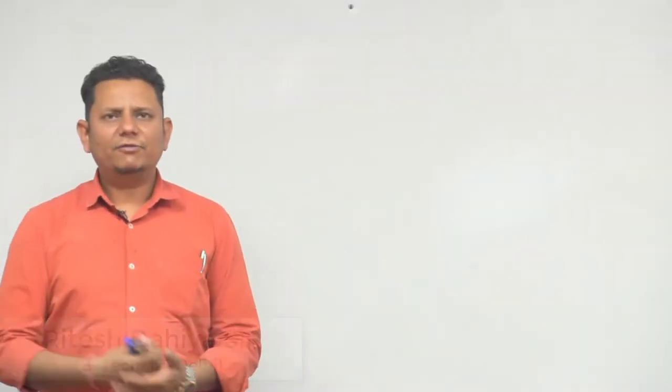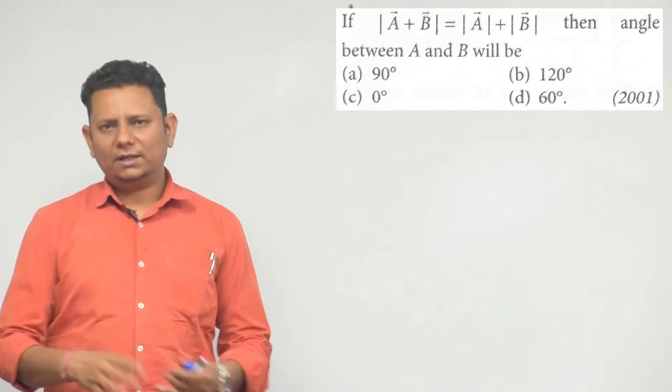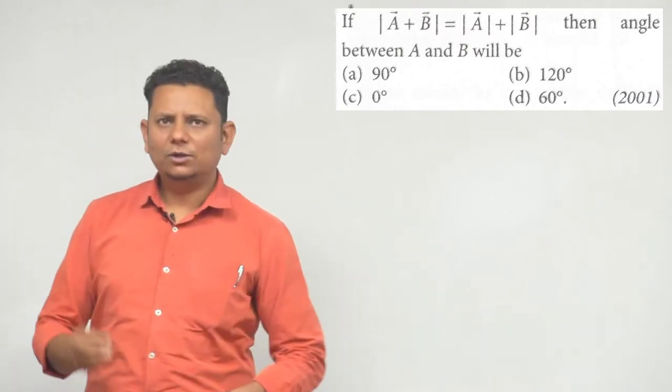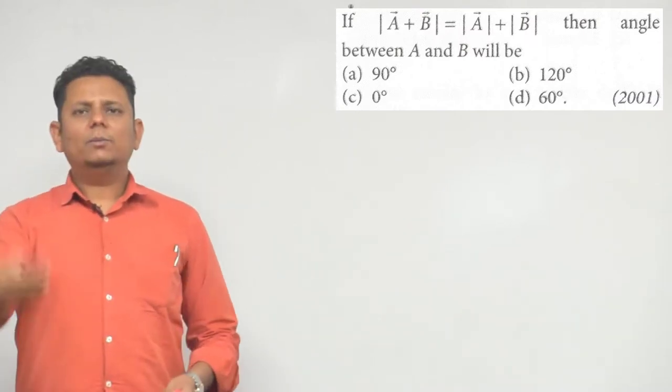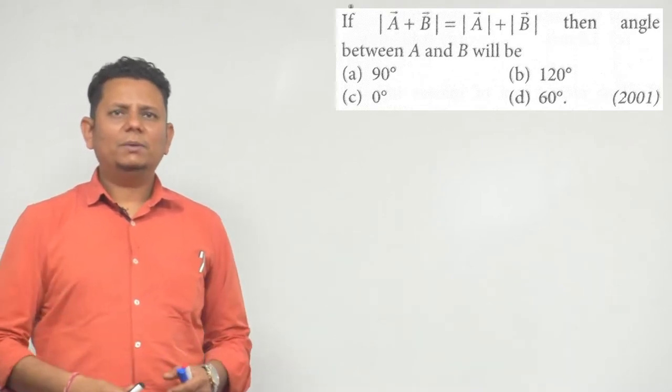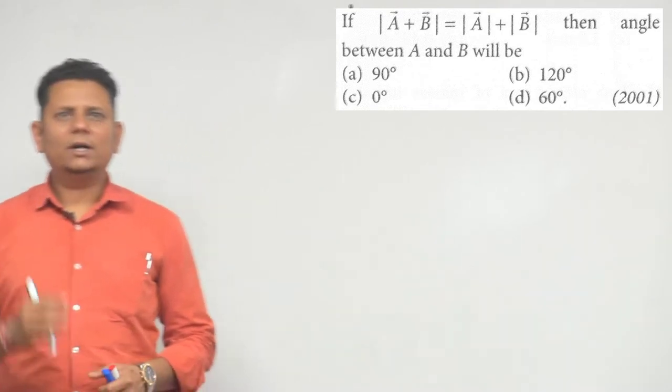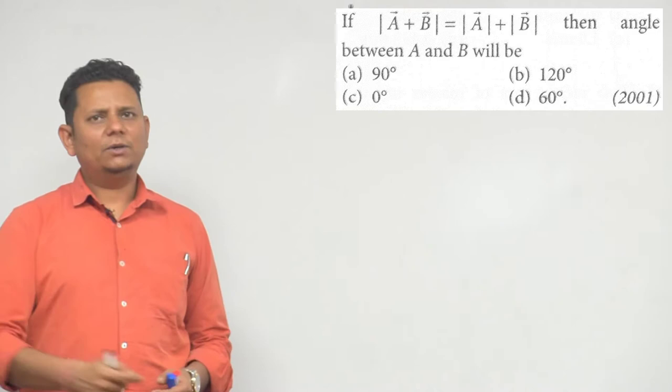Next question, 2001 ka sawal hai. It says if |A + B| is equal to magnitude of A vector plus magnitude of B vector, hum hai bata na hai, doonho ki bich mein angle kya hohega. Options hai 0 degree, 60, 90, 120 degree.